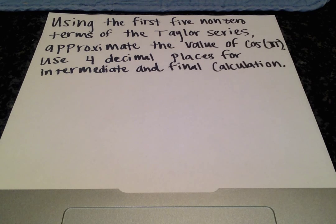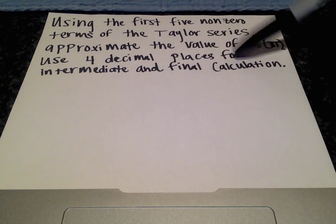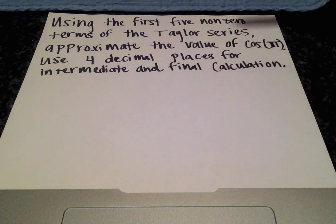Okay, so we're asked, or told, using the first five non-zero terms of the Taylor series, approximate the value of cosine of π, using four decimal places for intermediate and final calculation.